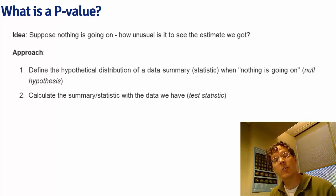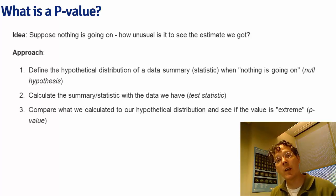First of all, you get the hypothetical distribution of a data summary, which we'll just call a statistic, like our test statistic from the T lecture, and figure out its distribution when nothing is going on, the so-called null distribution of the statistic. Then we calculate the statistic with the data that we actually have. For example, we calculate our T statistic by plugging in the empirical mean, subtracting off the hypothesized mean, and dividing by the standard error. Then we calculate the probability of obtaining a statistic as or more extreme.